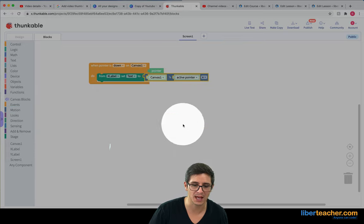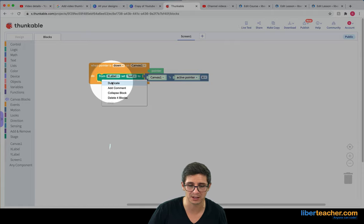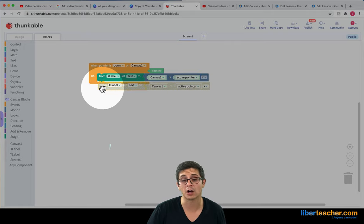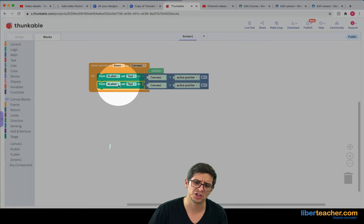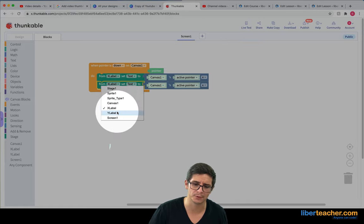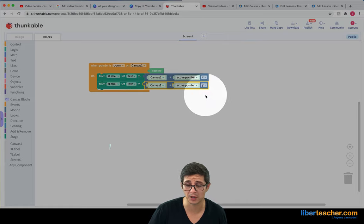So I can put that for the xlabel, and for the ylabel, to make things easy, I can just right click on it and hit duplicate, or I can copy and paste as well. I'm going to change this to be the ylabel, and I'm going to change this to be the ylabel as well.